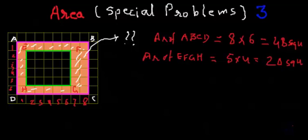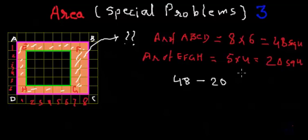So what will be the area of the portion colored in peach? The area of that portion will be the area of the outer rectangle, 48 square units, minus the area of the inner rectangle, 20 square units. So it will be 48 minus 20, which is 28 square units.